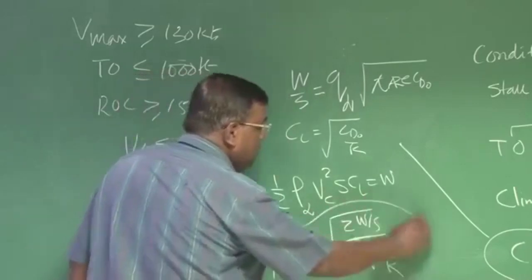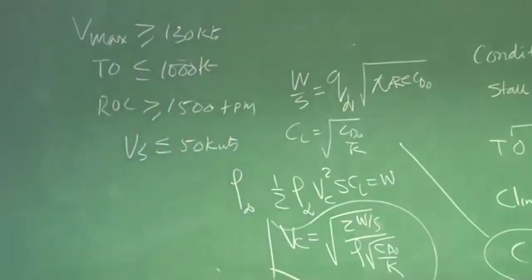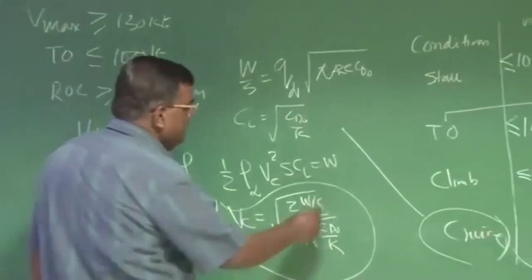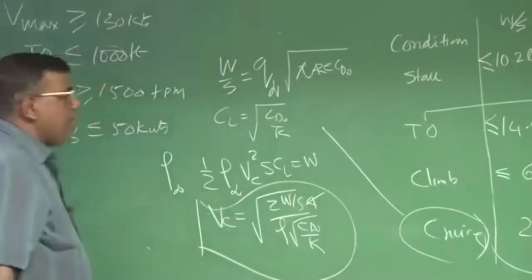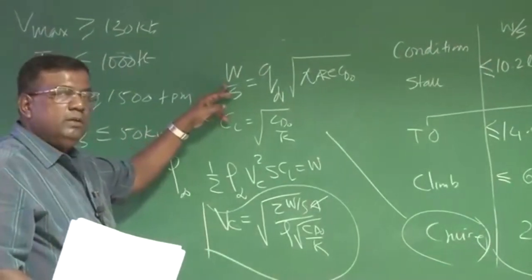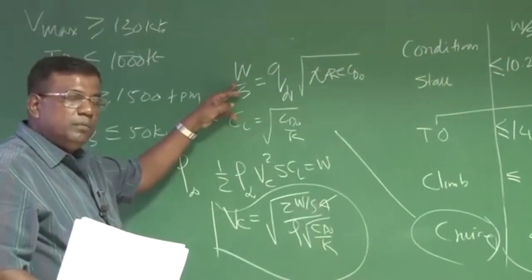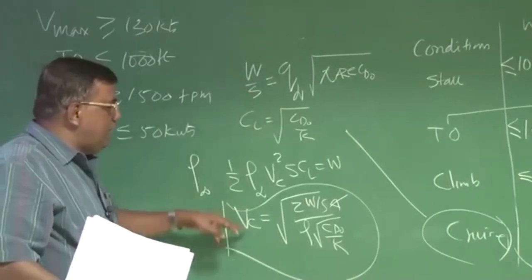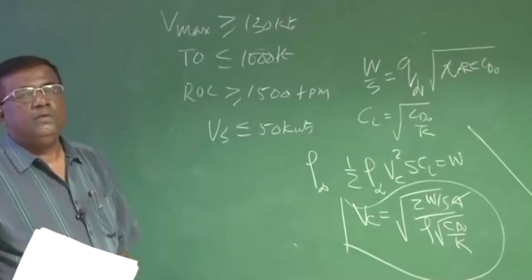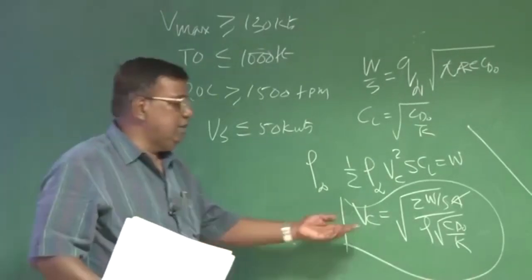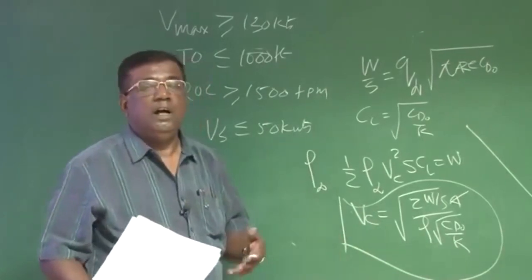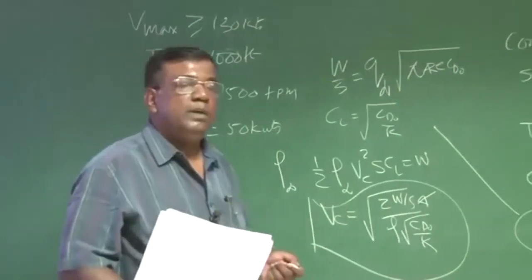So you could see that your V cruise gets fixed for a given wing loading, which is for range to maximum. But you have to check whether this cruise speed is what a customer is looking for. He may say, oh come on this speed is very low or you may find this speed is coming very, very high. That will have lot of structural implication.